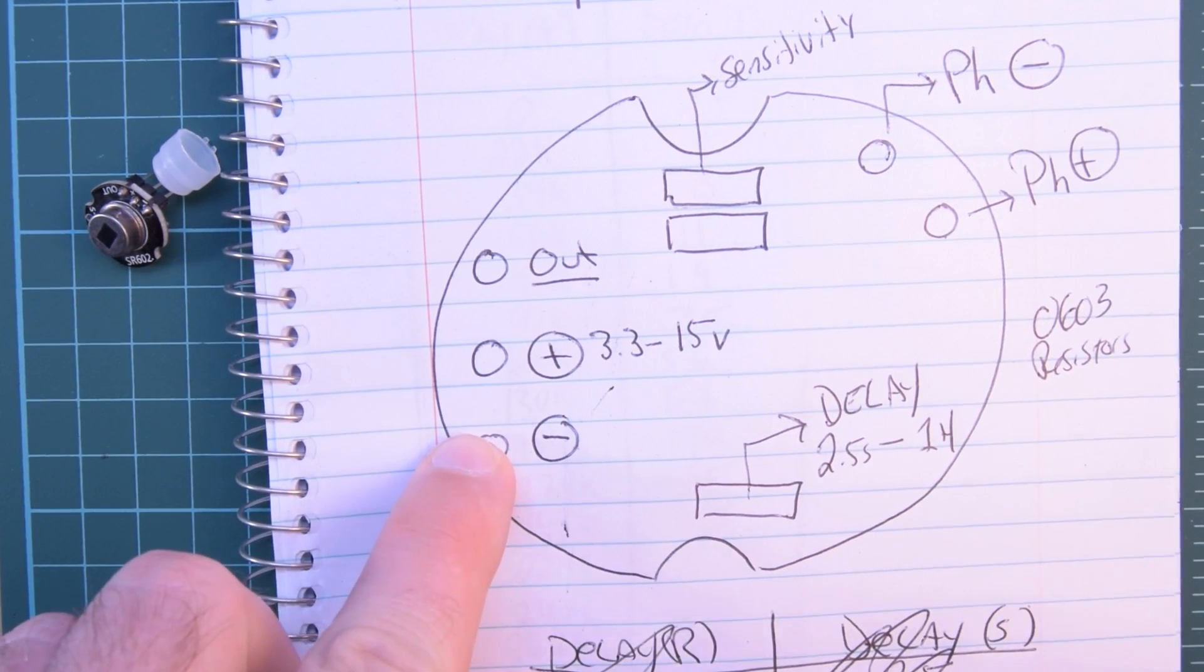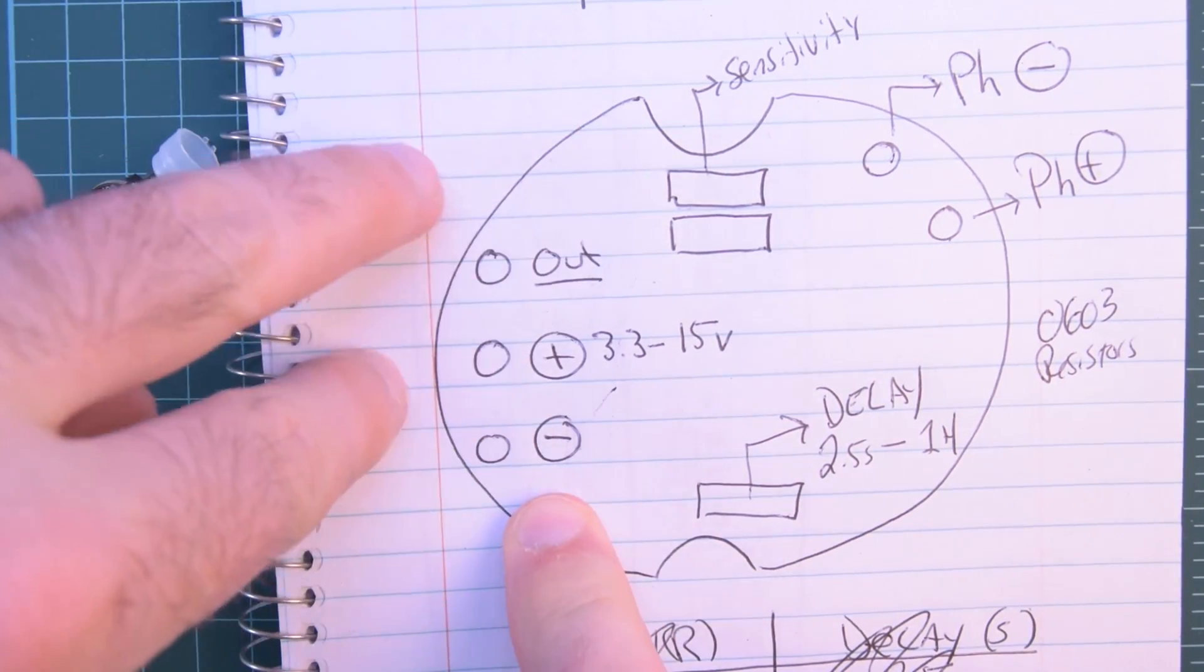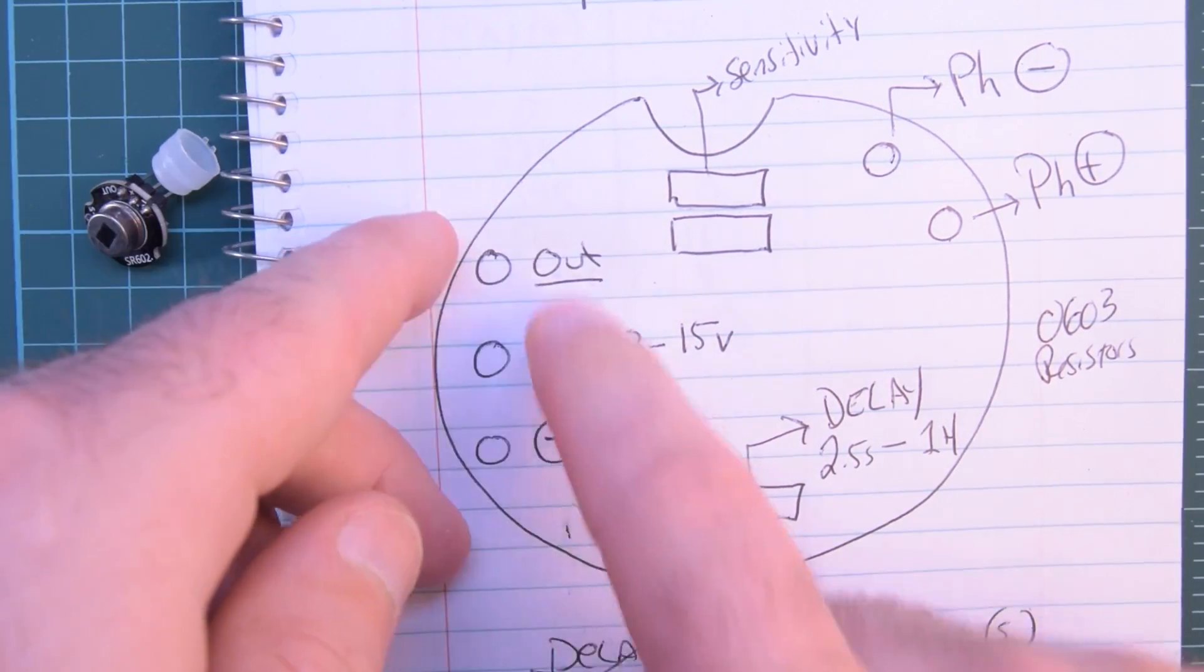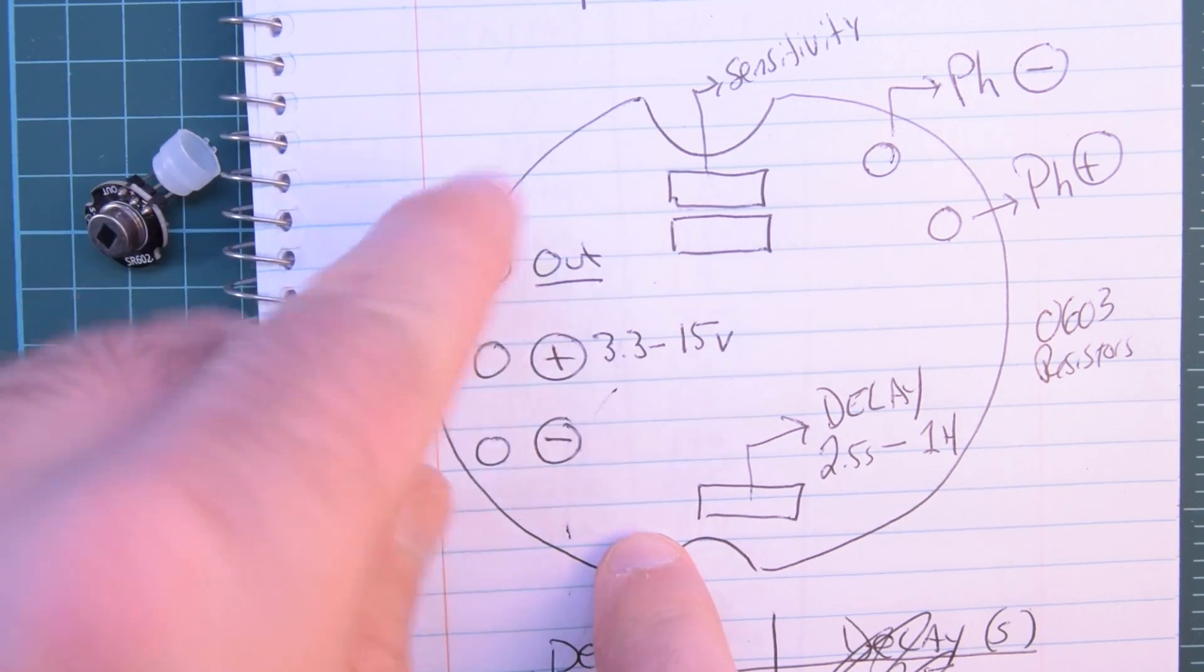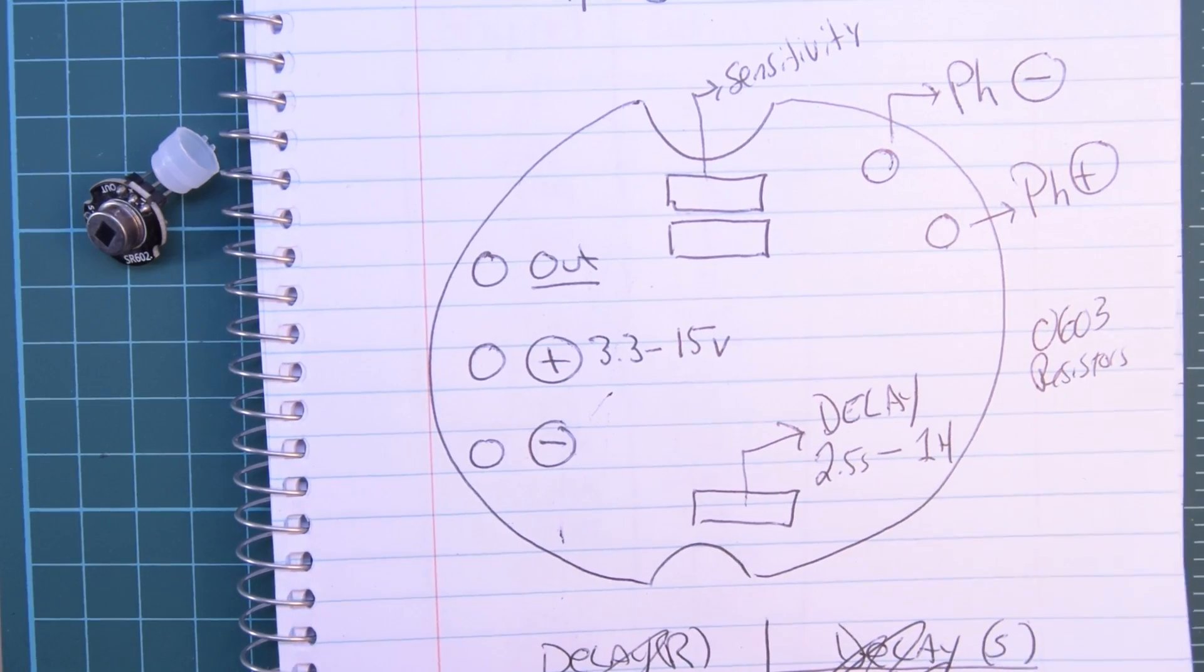Then you've got three pins over here. You've got the output. You've got the ground, which is nice because if you flip the plug around, all you're doing is grounding the output. So, you're not damaging anything. Then in the middle, 3.3 to 15 volts.